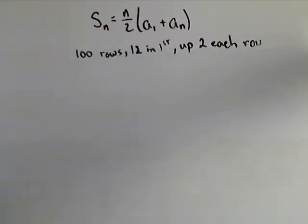A pretty typical arithmetic series problem is an auditorium where they give you the number of seats in the first row, how many more each row, and how many rows.